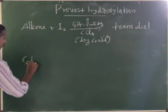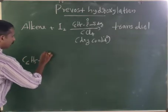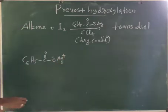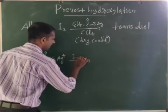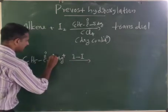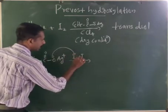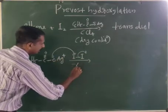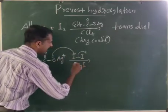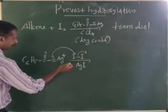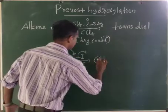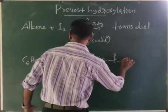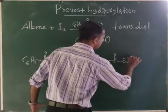As in Woodward reaction, the first step is: silver benzoate reacts with iodine (I2). The benzoate oxygen abstracts I⁺ from I2, and AgI (silver iodide) is eliminated, giving C6H5-C(=O)-O-I as the electrophilic iodine species.